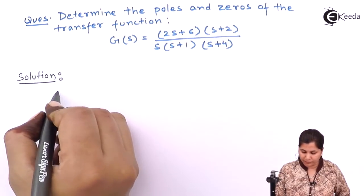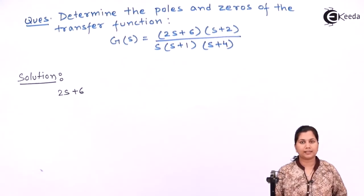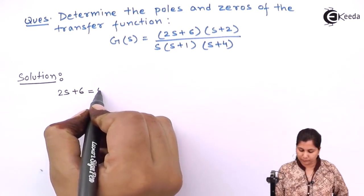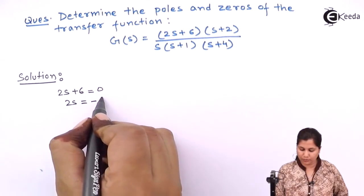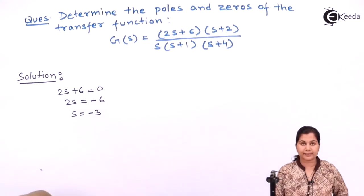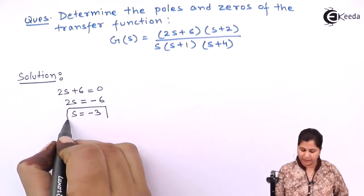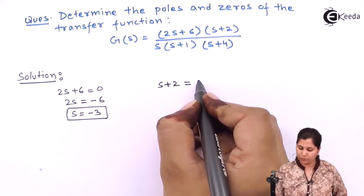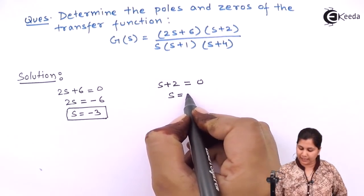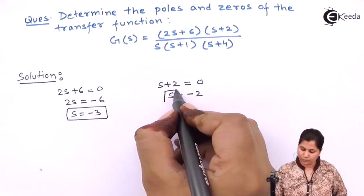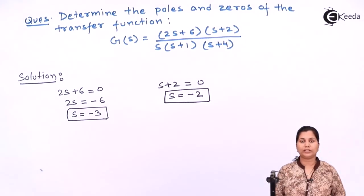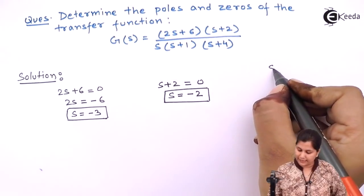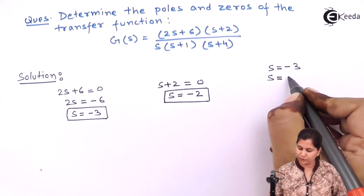First, consider the numerator polynomial. We have 2s + 6. Finding its factors by equating to zero: 2s = -6, so s = -3. That is one factor of the numerator polynomial. Next, consider s + 2; equating it to zero gives s = -2. So the two zeros of the transfer function are s = -3 and s = -2.